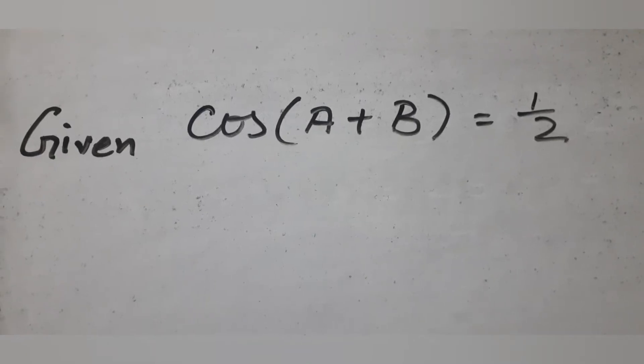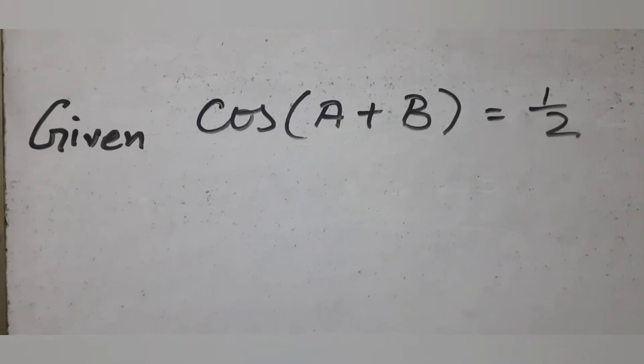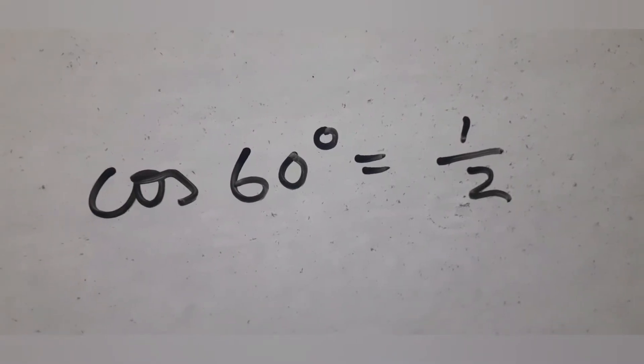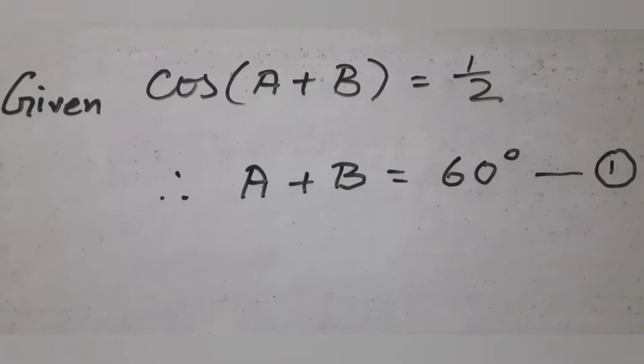Given cos(A+B) = 1/2, using standard values we know that cos 60° = 1/2, so we conclude that A+B = 60°.